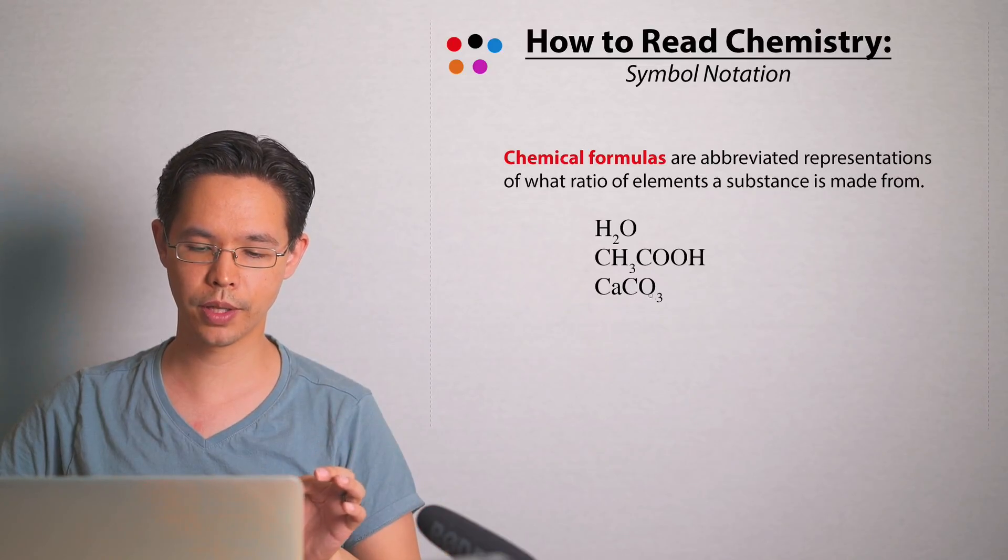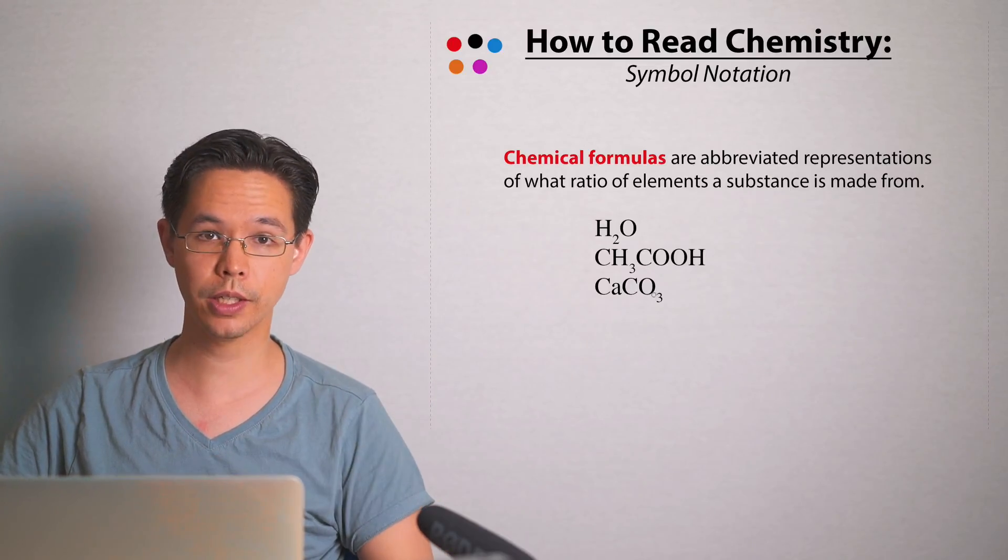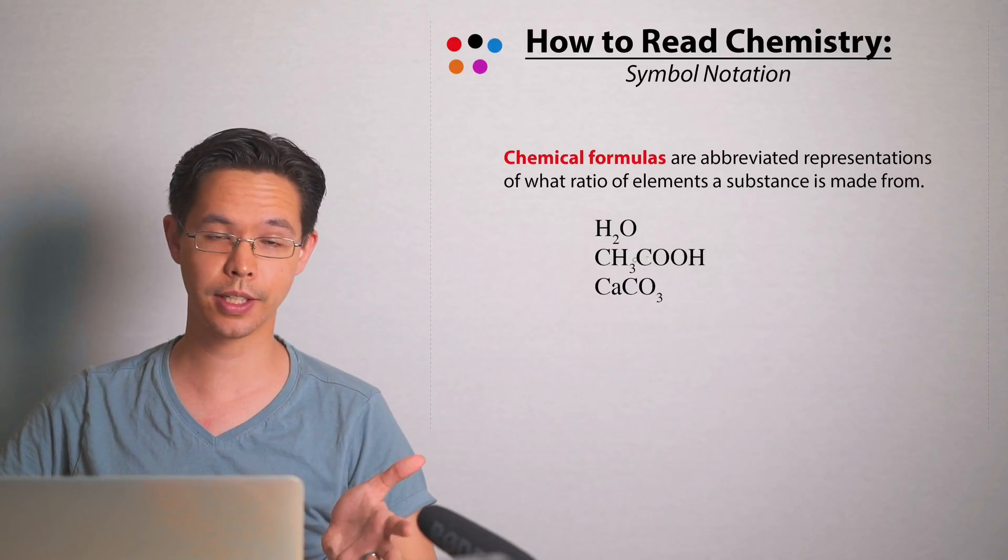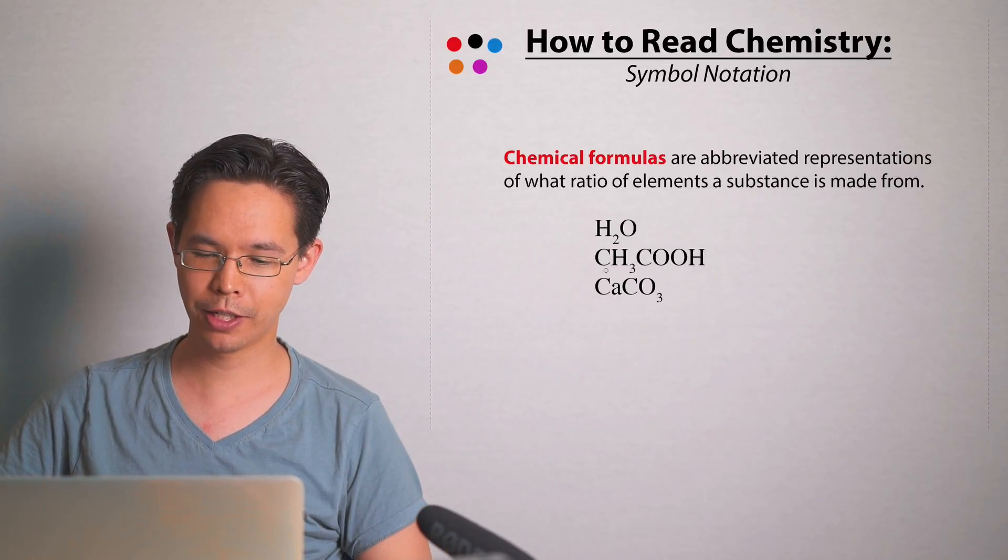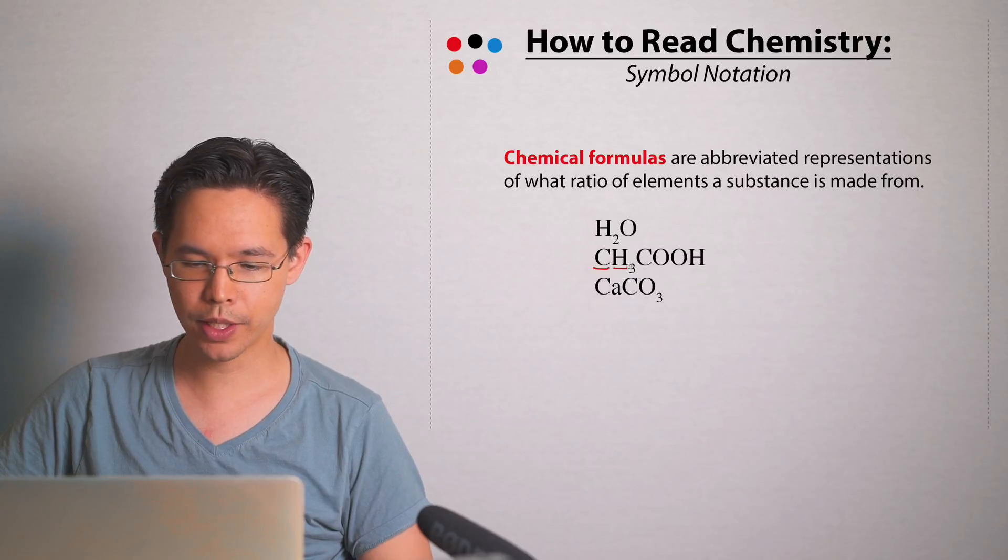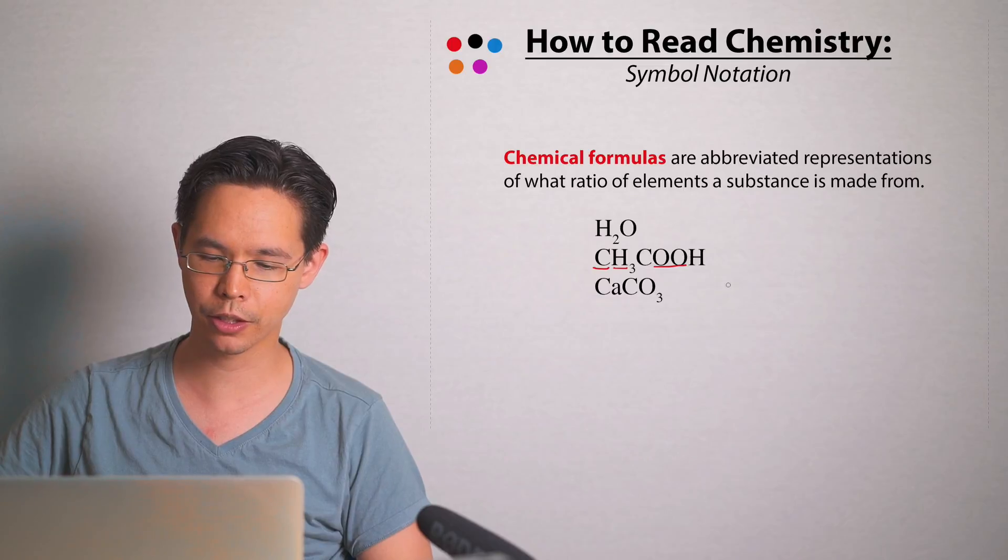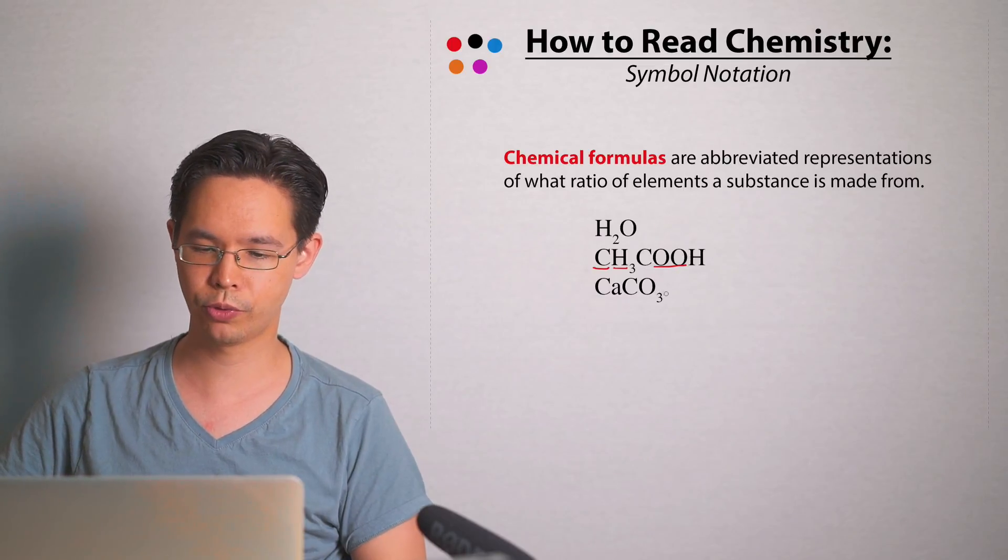The chemical formula below that one, that's the formula for vinegar, sometimes called ethanoic acid, sometimes called acetic acid, depending on what your favorite is. And we can see it's made of carbon, some hydrogen and some oxygen atoms. You can count how many of each of them to find your ratios.